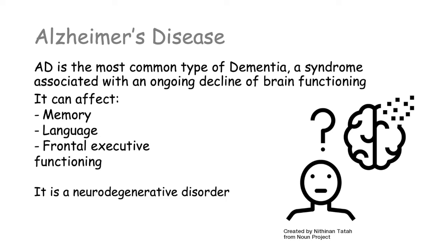Alzheimer's is a neurodegenerative disorder, meaning you're going to have the degeneration of neurons in the brain, particularly in the cerebral cortex. It is also a progressive disease, meaning it will get worse over time.